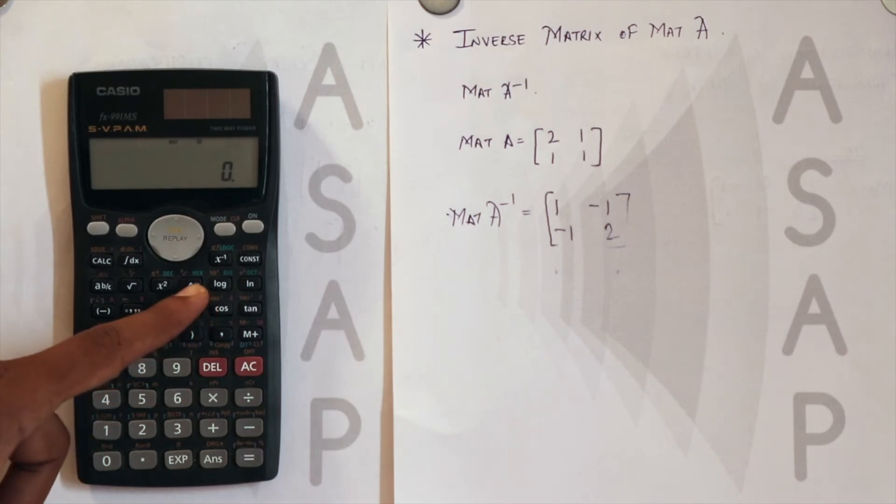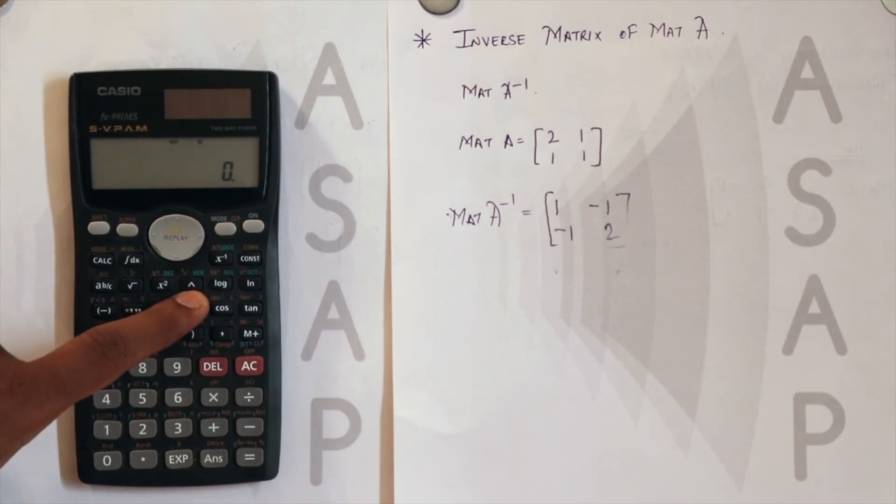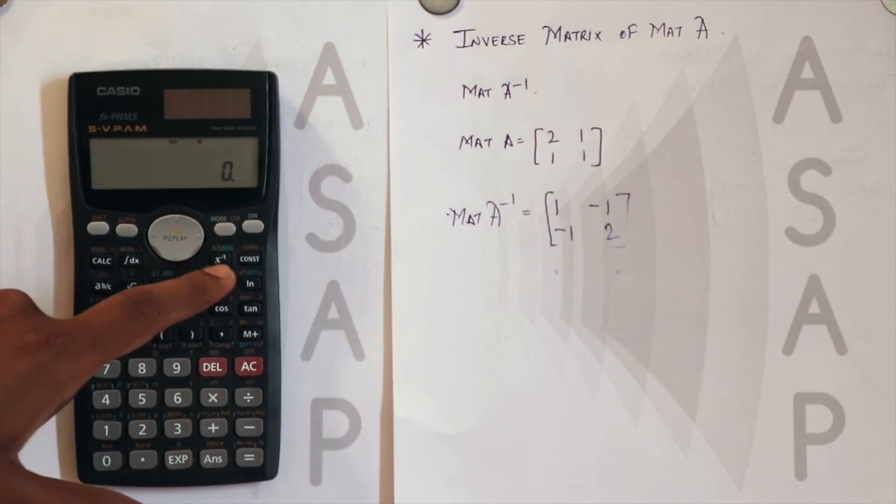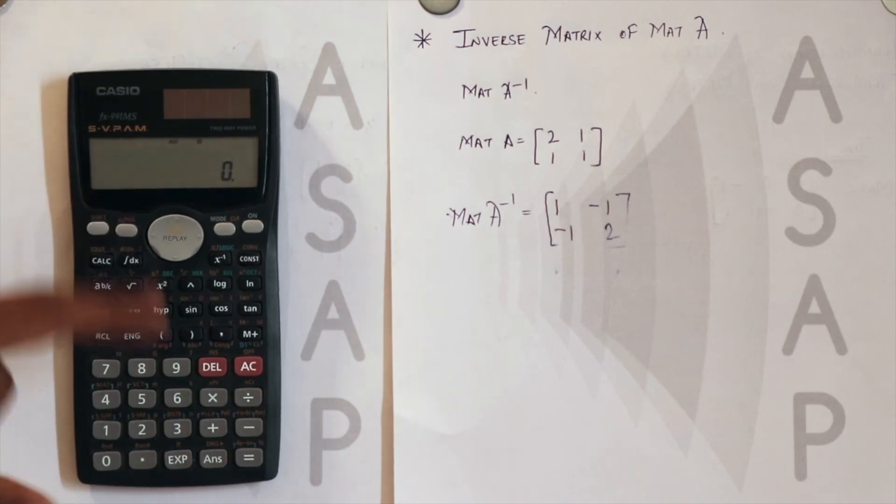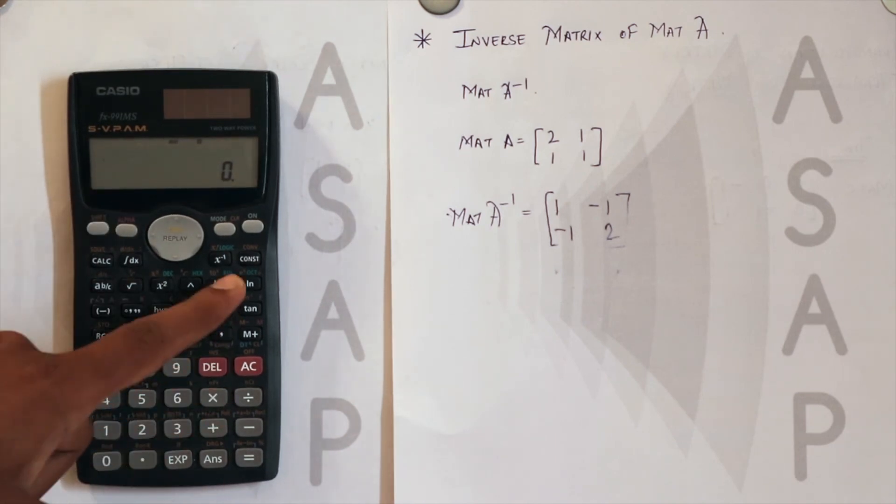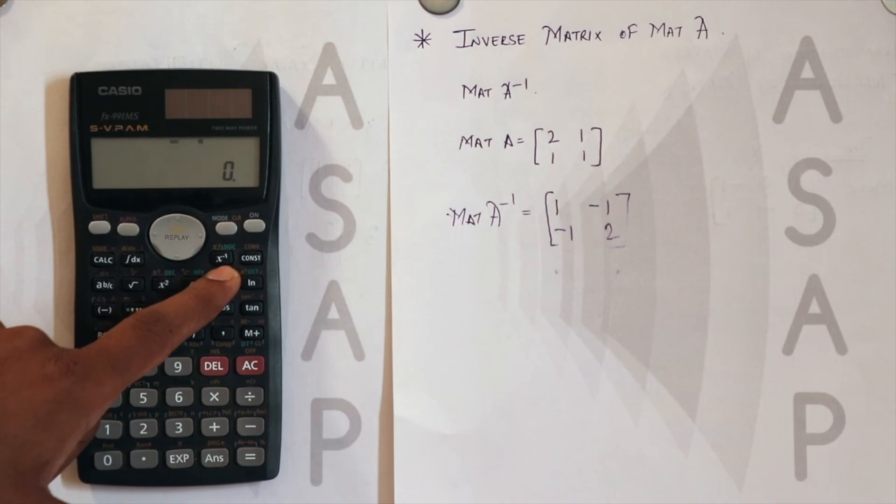An important point to notice: you can't use the raised to option and then use the minus 1. You need to select the matrix on which you need to perform the operation and then use the x raised to minus 1 option. Thank you.